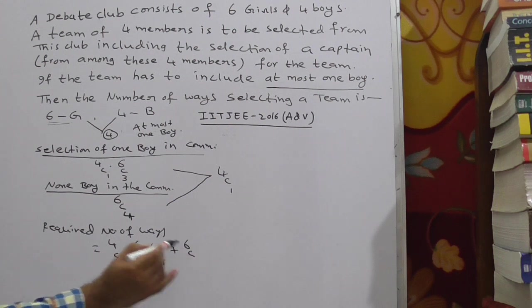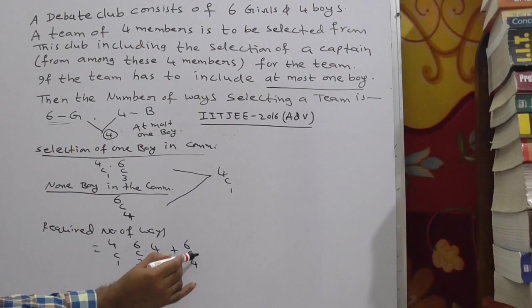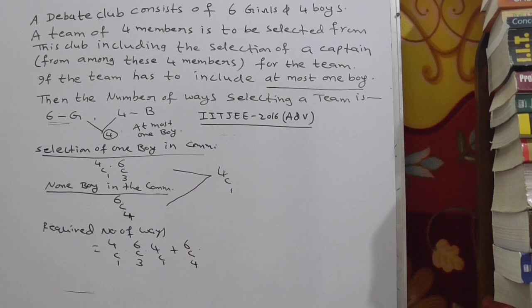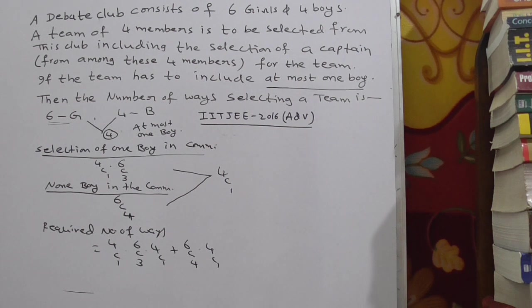we are selecting all 4 members from given 6 girls only. That is 6C4. In second case also you have to select 1 captain from 4. So this is 4C1. Now calculate this.